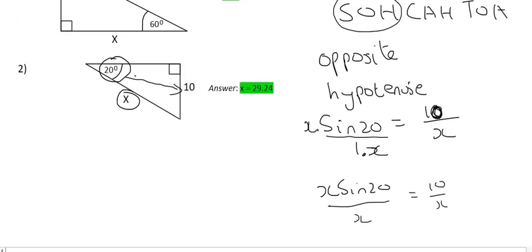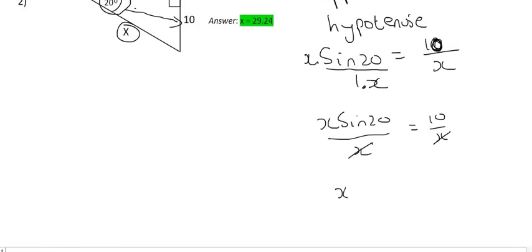Then because the denominators are now the same, you can just cross those out. So we're going to end up with x sin 20 equals to 10. And so to get x alone, you're going to have to divide by the sin of 20. So you're going to end up with 10 over the sin of 20.